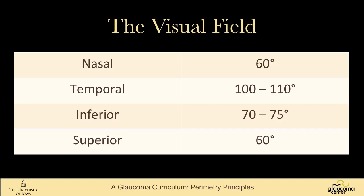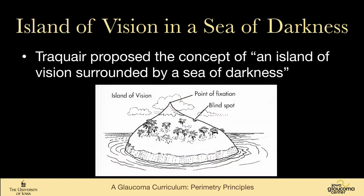The visual field is widest temporally, and there's less visual field above, nasally, and below because of structures of the face like the nose that block the visual field. If you think about the field like an island of vision surrounded by a sea of darkness, it's a helpful way to imagine what perimetry is trying to do. We have this island, and the peak of the island is the fovea.